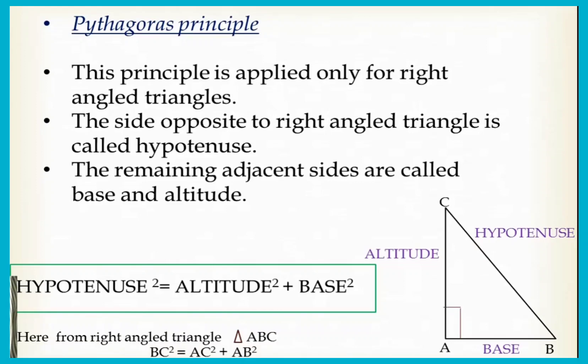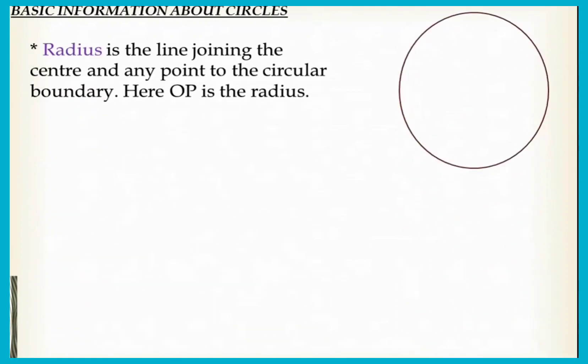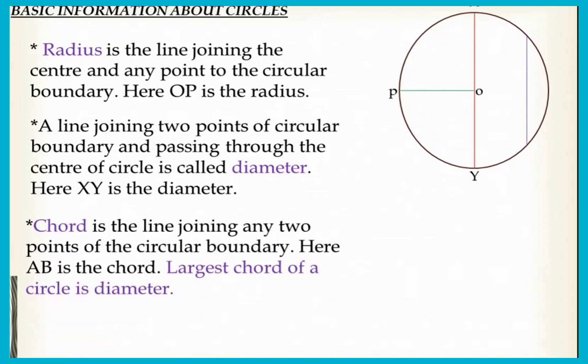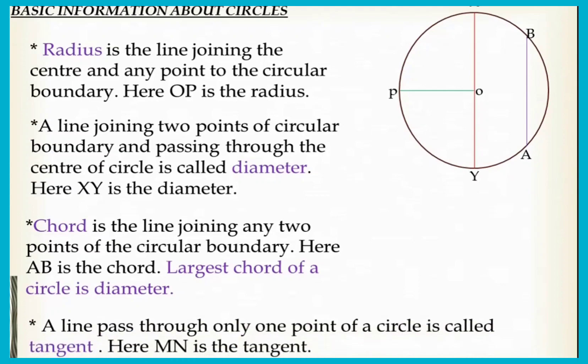Now let us discuss some more basic information about circles. Radius is the line joining the center and any point to the circular boundary. Here OP is the radius. A line joining two points of a circular boundary and passing through the center of a circle is called diameter. Here XY is the diameter. Chord is the line joining any two points of a circular boundary. Here AB is a chord. The largest chord of a circle is the diameter.